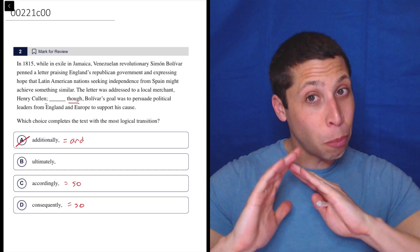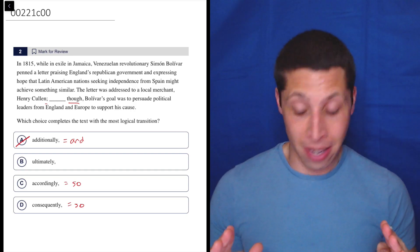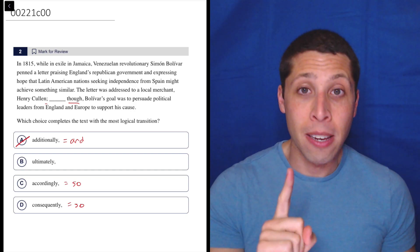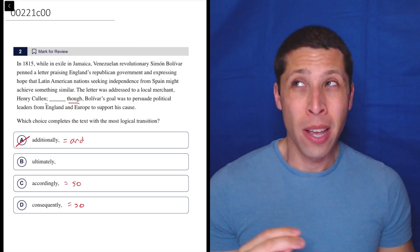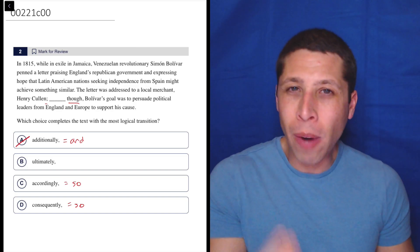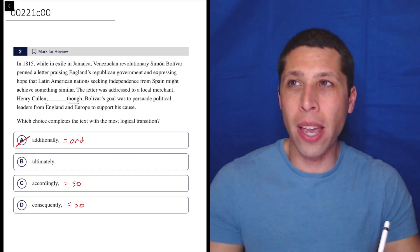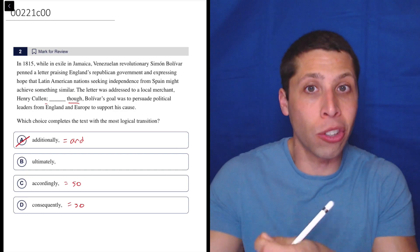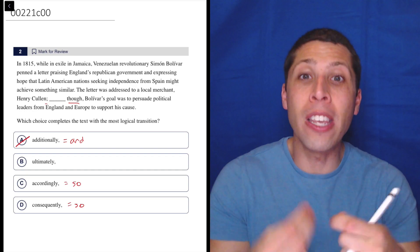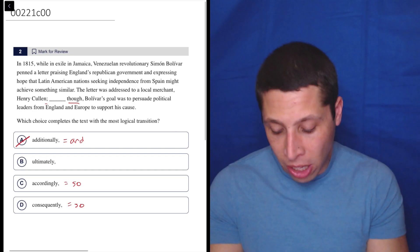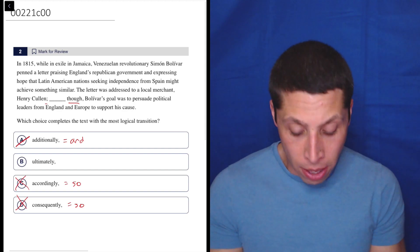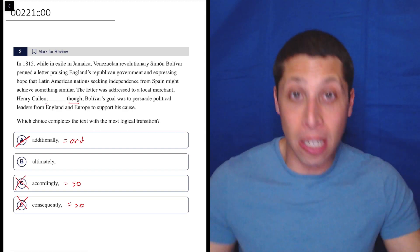Now from a purely strategic standpoint, if we know that accordingly means so and consequently means so, then how could so be correct? These are two words that mean the same thing. How would we know which version of so is the right version? These words are synonyms. So because they're the same, we can use this strategy where we cross them both out. They can't both be right, so they must both be wrong.